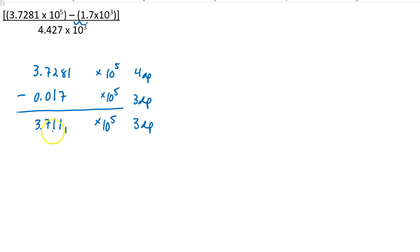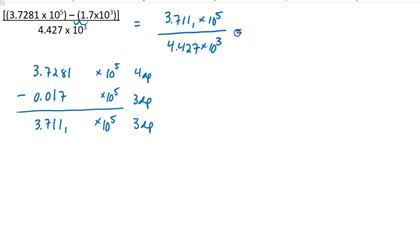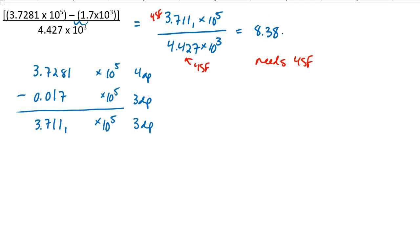I didn't round until the end because I've got more work to do. In this numerator we're getting 3.711 with an insignificant 1 times 10 to the 5th, and we're going to divide by 4.427 times 10 to the 3rd. Now I'm dividing — I don't care about decimal places anymore, I care about sig figs. We've got 4 sig figs upstairs and 4 sig figs downstairs, so our answer needs 4 sig figs. I am getting 8.382 with an insignificant 9, times 10 to the 1st. If I were to round, I would call that 8.383 times 10 to the 1st.